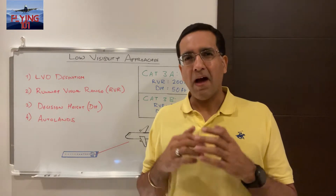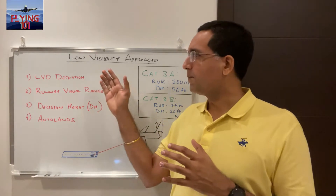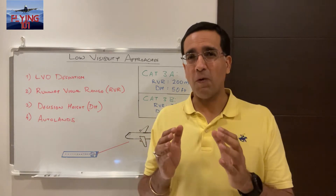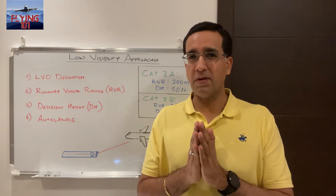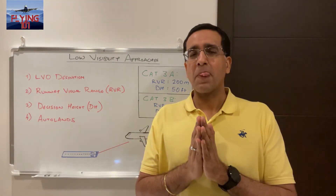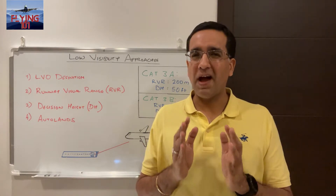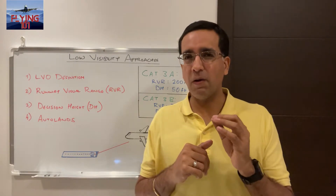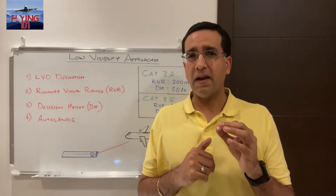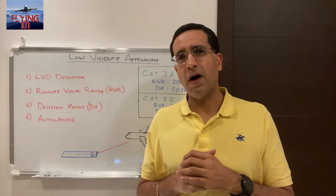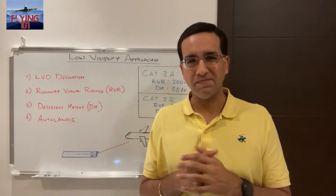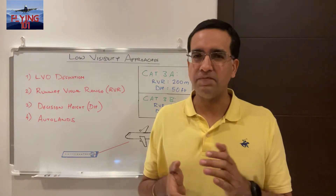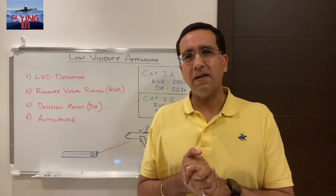Having briefly reviewed what low visibility ops are and why they're necessary, now let's get into the nuts and bolts of what's involved when we are talking about low visibility approaches. While low visibility operations also involve taxi, takeoffs, and landings, in this video we will be focusing on low visibility approaches — specifically Category 3 approaches — and why auto lands are carried out.